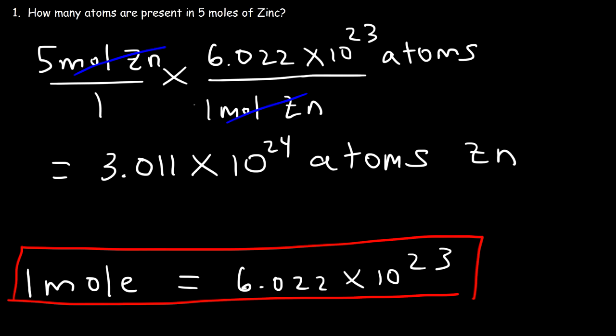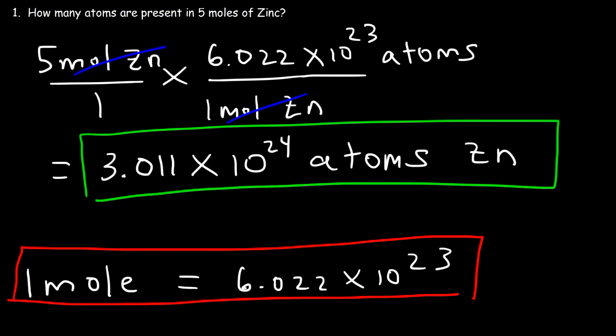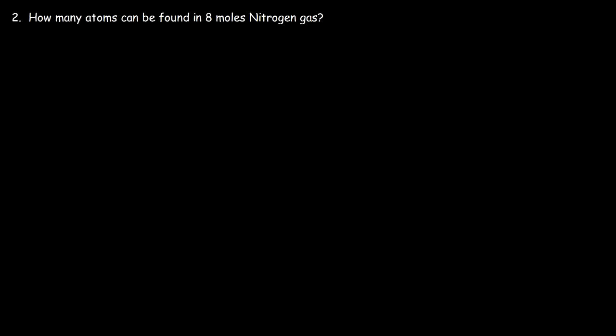That's a simple way to convert moles to atoms. Number two: how many atoms can be found in 8 moles of nitrogen gas? Feel free to try this one — but be careful.